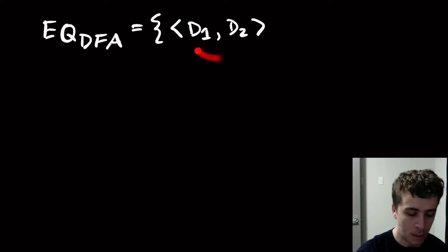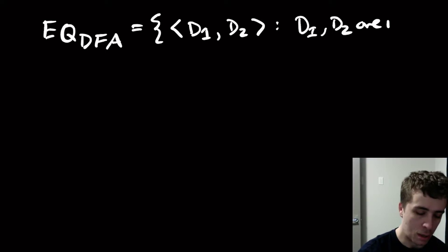The problem here is I'm going to give you two DFAs, D1 and D2. These two guys are DFAs.